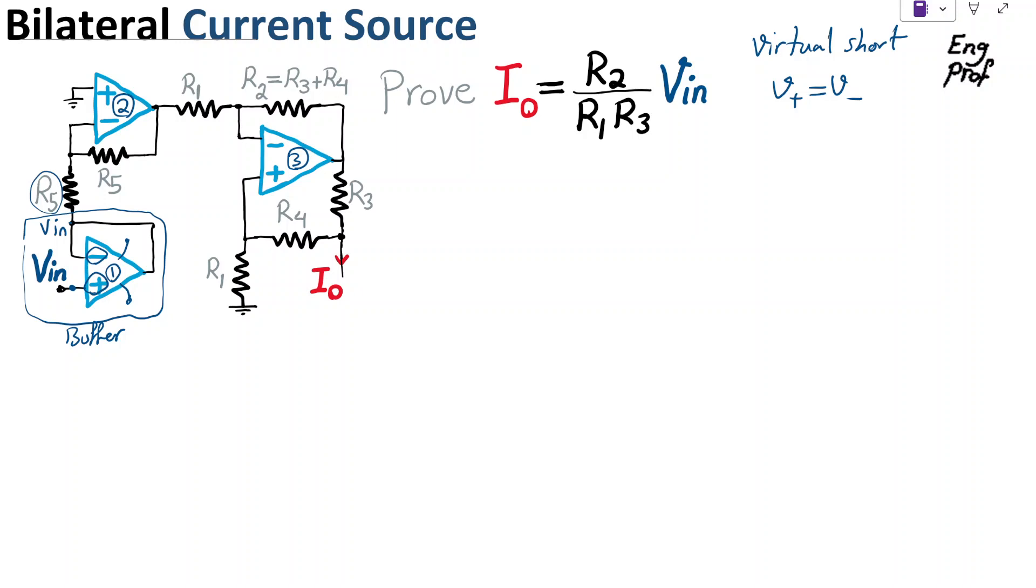So V_in appears at input of R5. From perspective of the second op-amp, which is op-amp number 2, that is this circuit, that is effectively just an inverting amplifier. You can see that V_in appears at the input of that and generates a current that flows like this to the output.